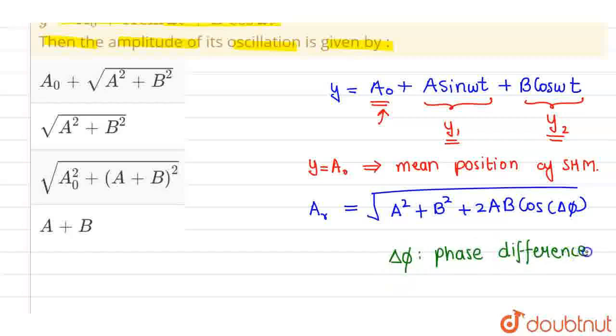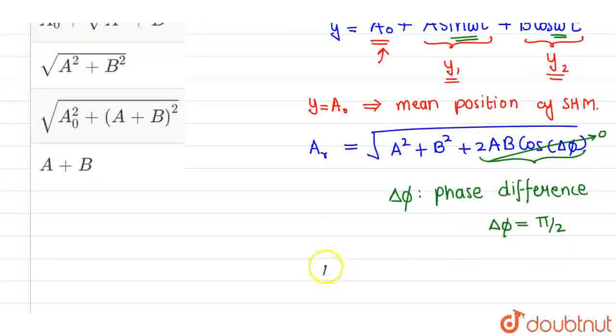Now, we know that phase difference between sine omega t and cos omega t is pi by 2. So here, delta phi equals pi by 2 and we know that cos pi by 2 is 0. So this particular term is 0. Overall, we are getting resultant amplitude as root A square plus B square.